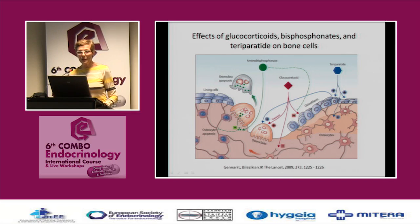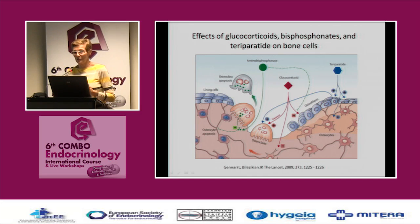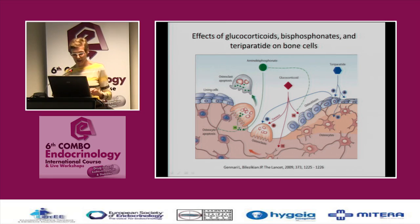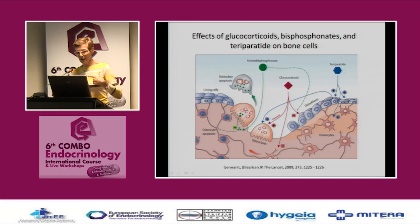When glucocorticoids are stopped, bone metabolism can improve, and then we can stop treatment if the risk is no longer there. Bisphosphonates reduce osteoclastogenesis and osteoclast activity, so bone resorption is reduced, and they can also partially block the deleterious effects of glucocorticoids on osteoblasts. Teriparatide acts by stimulating bone formation — targeting where long-term glucocorticoid treatment does the most harm.